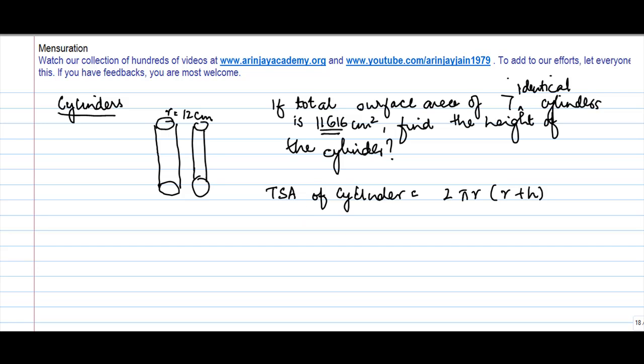So in this case we have 7 identical cylinders. So area of 7 cylinders will be 7 into 2πr(r+h). This is so because the area of one single cylinder is 2πr(r+h). So therefore for 7 it is 7 into this.